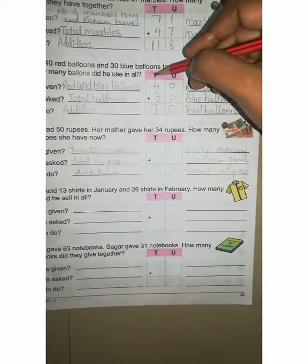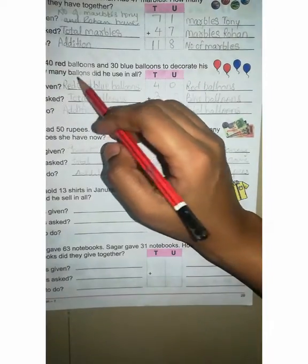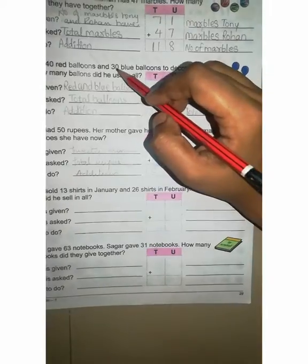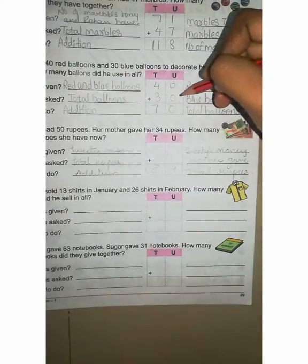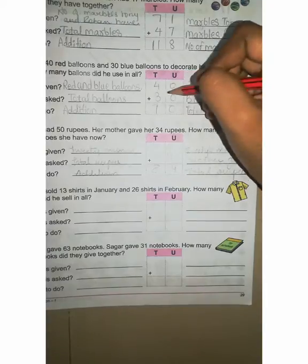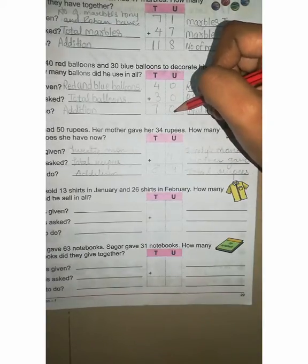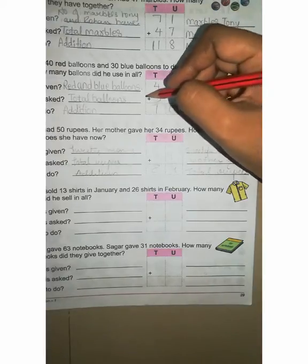Now unit and tens place given. First line you can write 40 red balloon, write 40 red balloon. Second line you can write 30 blue balloon, plus 30 blue balloon. Now 40 plus 30, how much? 0 plus 0, you can write 0 because no value. 4 plus 3, how much?